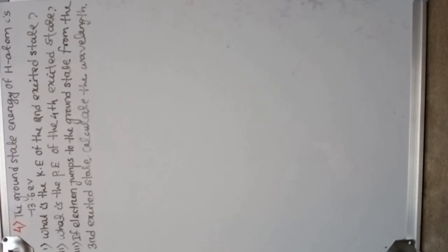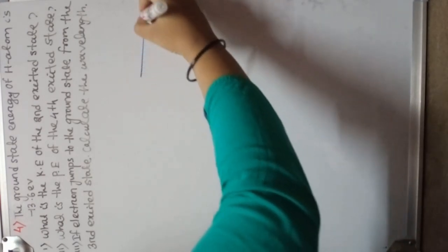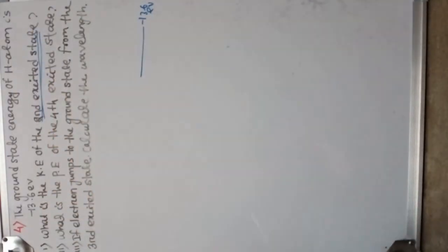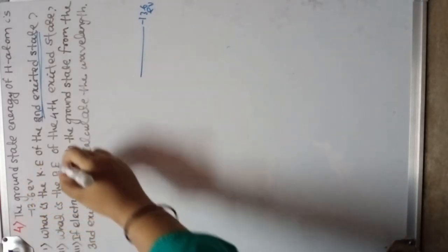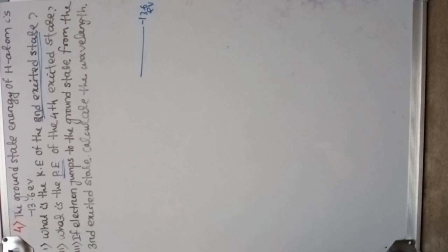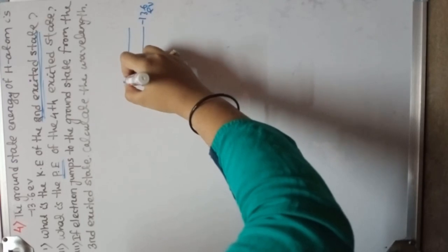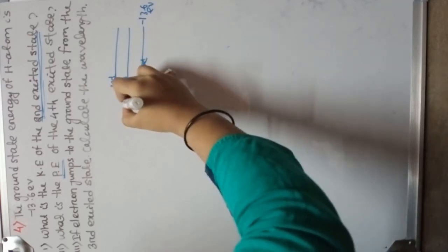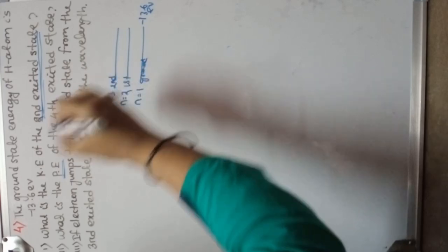The next question: the ground state energy of hydrogen atom is −13.6 eV. What is the kinetic energy of the second excited state and what is the potential energy of the fourth excited state? Note that the ground state is n=1, the first excited state is n=2, the second excited state is n=3, and the fourth excited state is n=5.